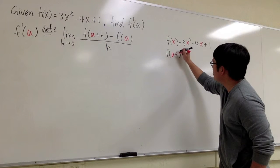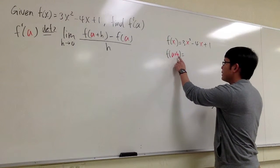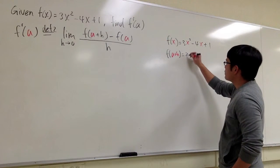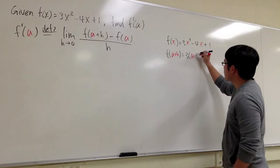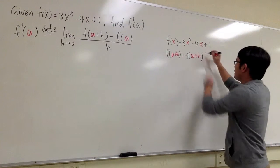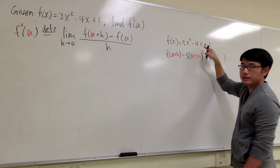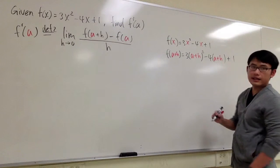And then to get f(a+h), let's look at this. What we need to do is plug in a+h into all the x that we have in the original function. 3 times (a+h) and then raise to the second power, then minus 4 times, the x becomes the a+h.